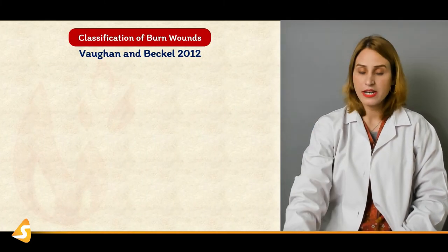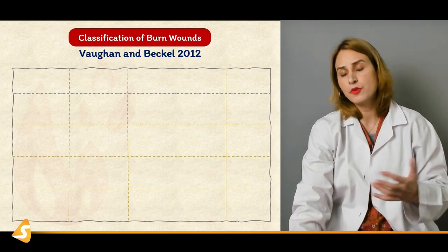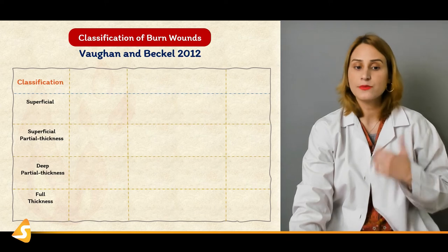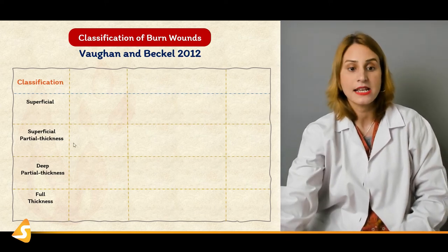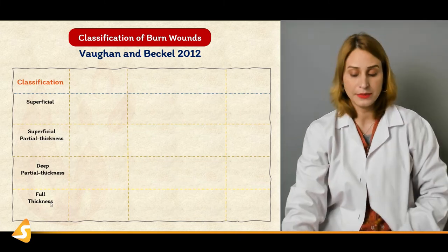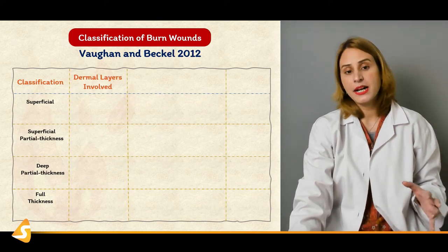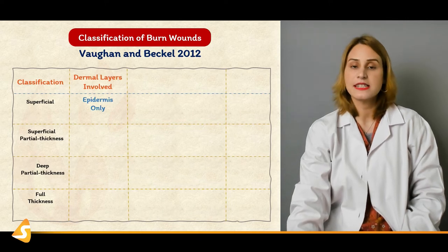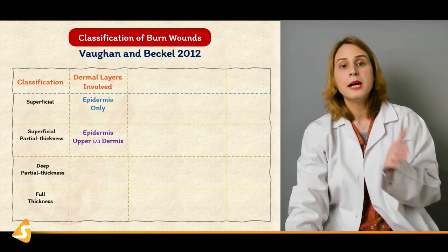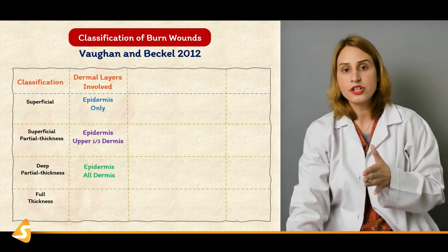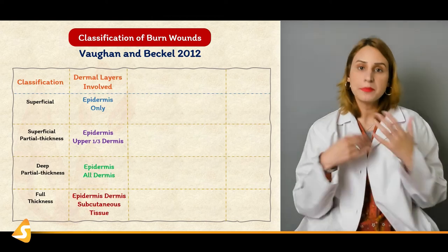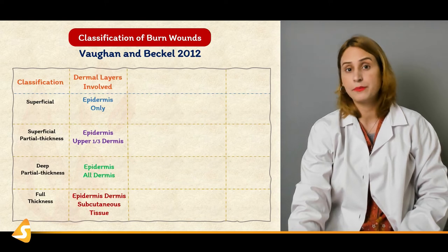There is a classification system called the Wagen and Backel classification system which we use to classify burn wounds. Superficial is first degree. Superficial partial thickness is second degree. Deep partial thickness is third degree, and full thickness is fourth degree burn. Regarding the dermal layers involved: superficial is epidermis only; superficial partial thickness involves the upper one-third of the dermis — papillary dermis; deep partial thickness involves epidermis and all dermis including reticular dermis; and full thickness involves epidermis, dermis, subcutaneous tissue, and may involve bones, tendons, and muscles.